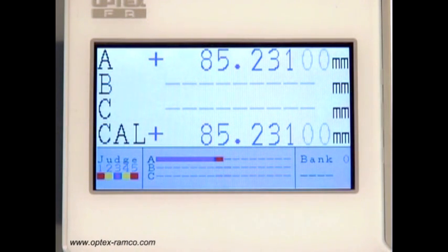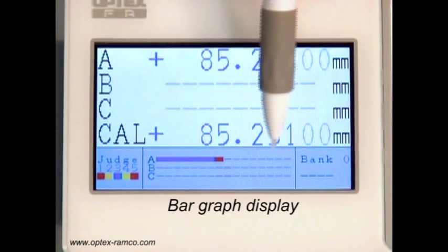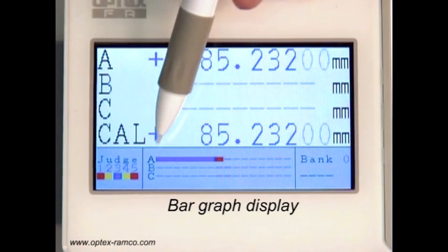In the center of the display is a bar graph that represents where in the sensing field the target is currently located.